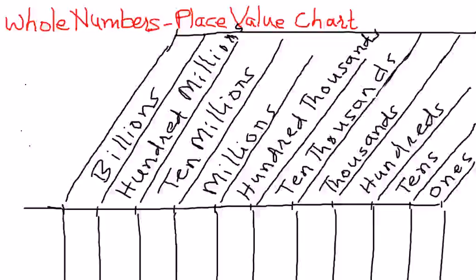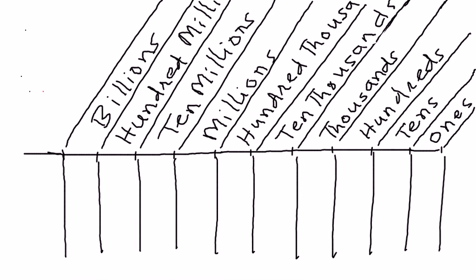A place value chart looks like this. It is a chart which represents the place of a number given to us.